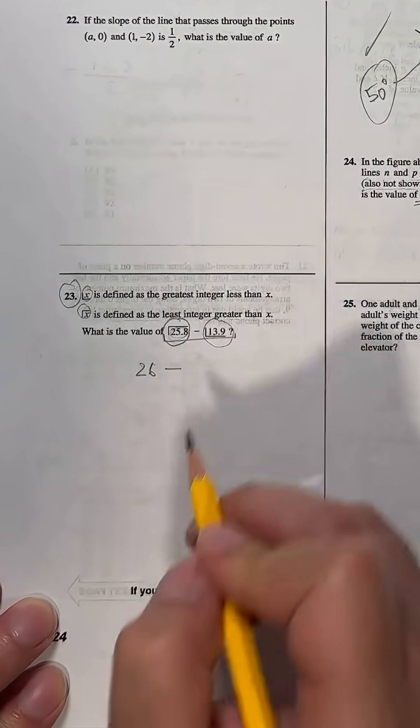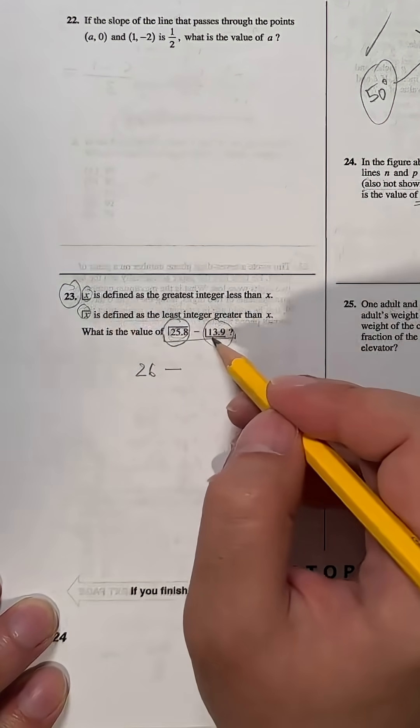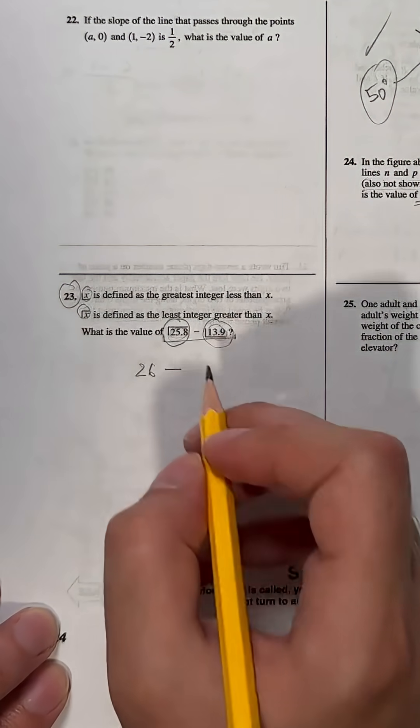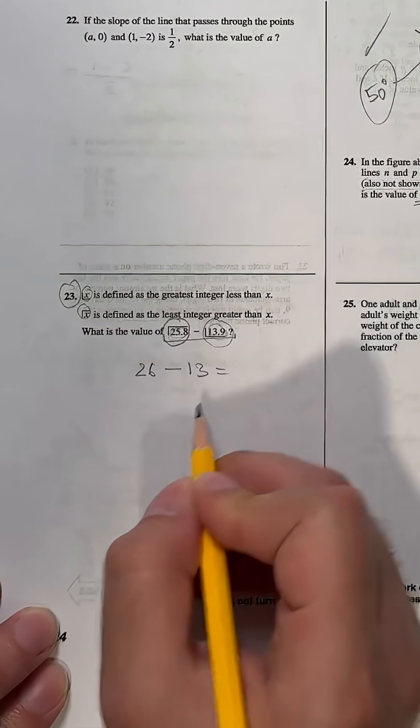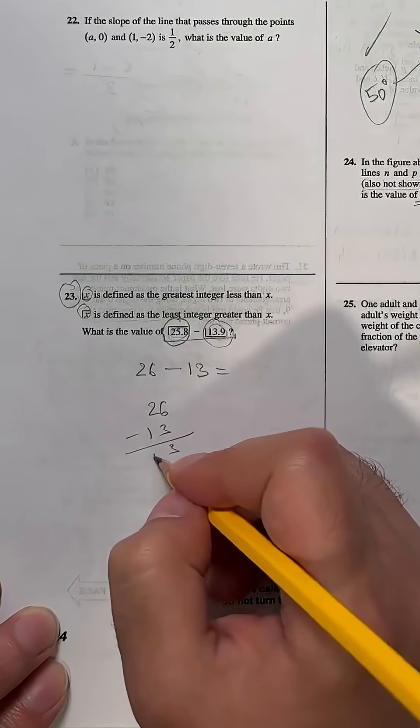Now we move to 13.9. The floor of 13.9 is the greatest integer less than 13.9, and that is 13. So the expression simplifies to 26 minus 13, which is equal to 13.